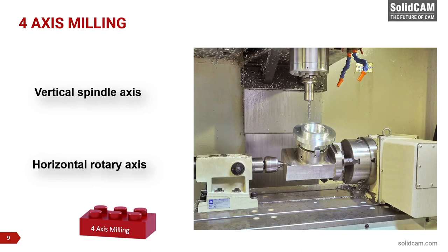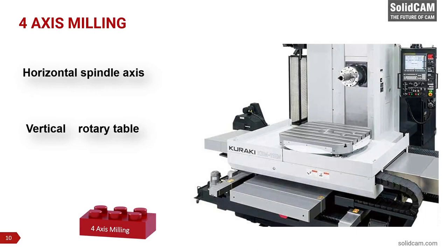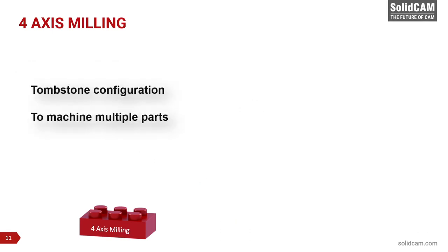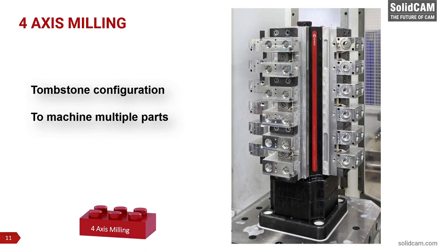A 4-axis milling solution is often a special device added to the table of a 3-axis vertical milling machine, where the rotary aligns horizontally on the table and uses the vertical spindle to machine. The rotary axis can also be an integral part of the CNC machine, where the table has the ability to rotate with the spindle oriented horizontally. These machines are called horizontal milling machines and are designed to handle large or heavy workpieces. Tombstones can also be added to 4-axis machines to allow for efficient machining of multiple workpieces.